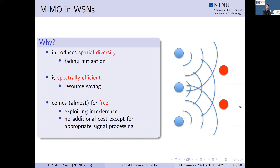MIMO comes almost for free in the wireless medium, because all receiving nodes will be listening to all transmitting nodes — there are no dedicated channels, so there is interference. But with some additional processing, we are able to exploit this interference and turn it into a benefit for our systems.